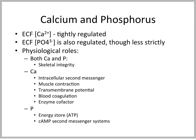The physiological roles of calcium and phosphate are obviously involved with skeletal integrity. Calcium is known as an intracellular second messenger involved in muscle contraction. It impacts the transmembrane potential, is involved with blood clotting, platelet function, and is a cofactor for many enzymes. Phosphate, of course, is important for the energy store ATP and for second messenger systems like cyclic AMP.